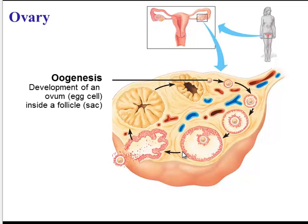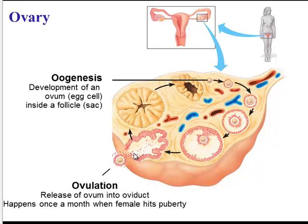So this process is oogenesis. Once that egg cell is mature, it will be released in a process known as ovulation. Ovulation is the release of that ovum, or egg cell, into the oviduct. And this will happen once a month as soon as a female hits puberty — one egg cell released every month, for the most part.